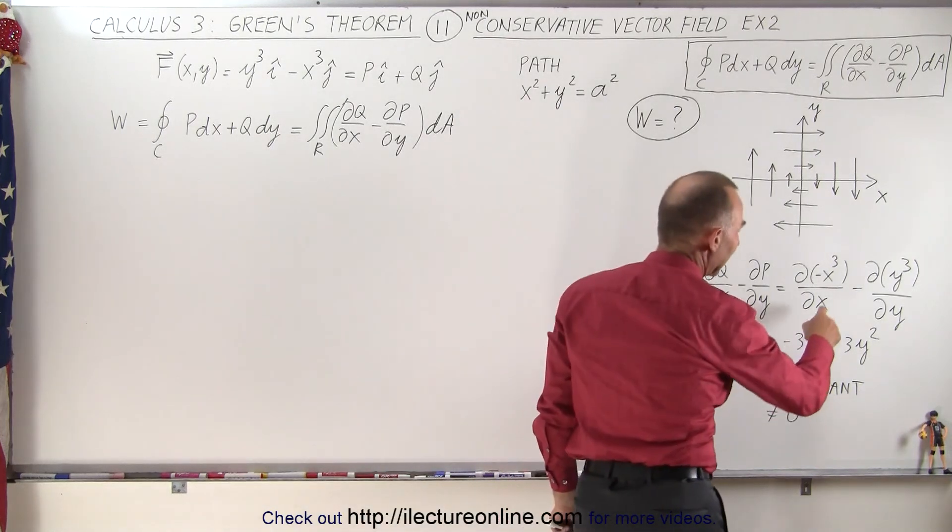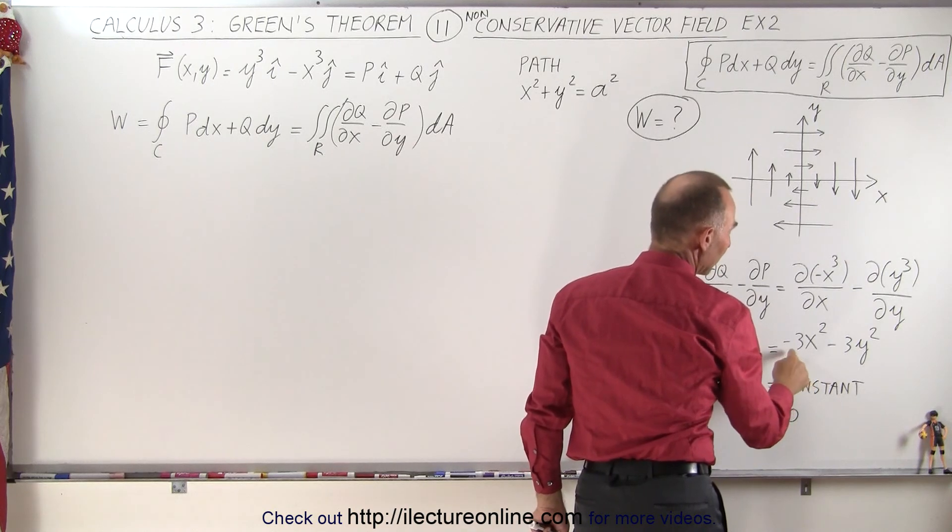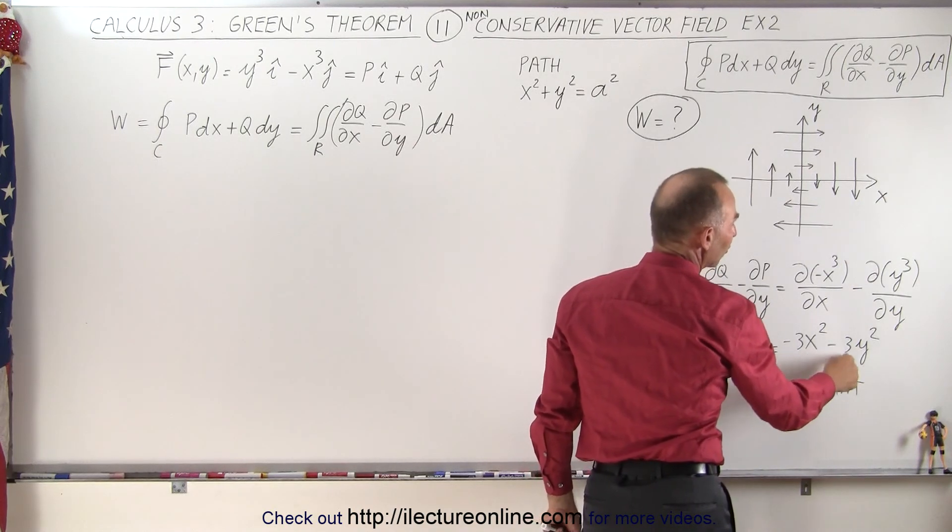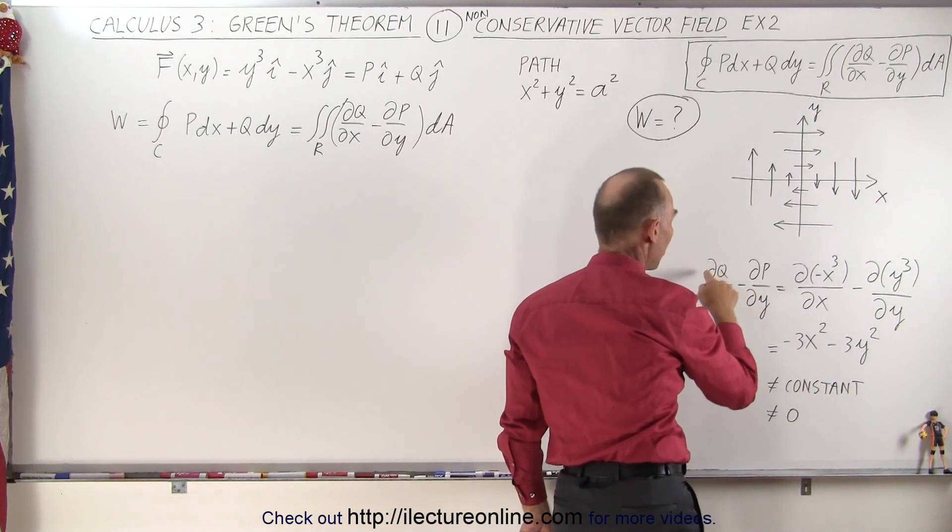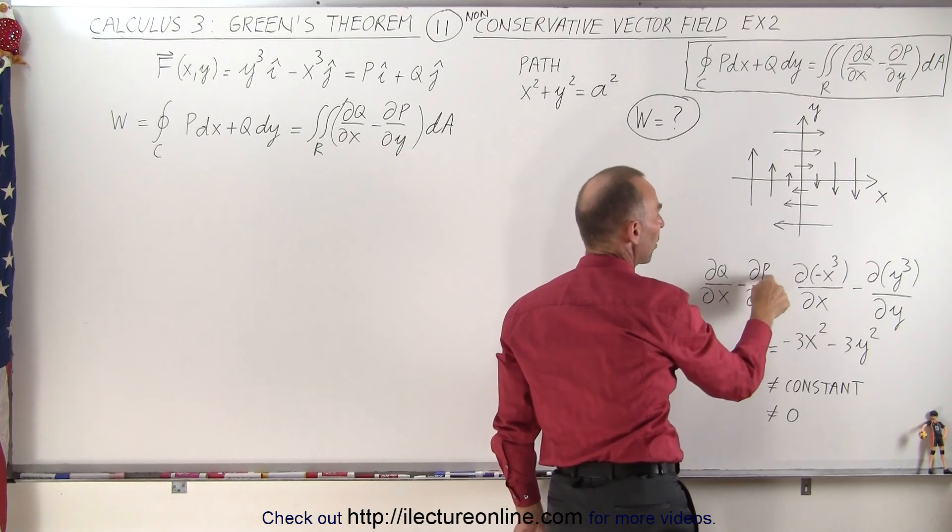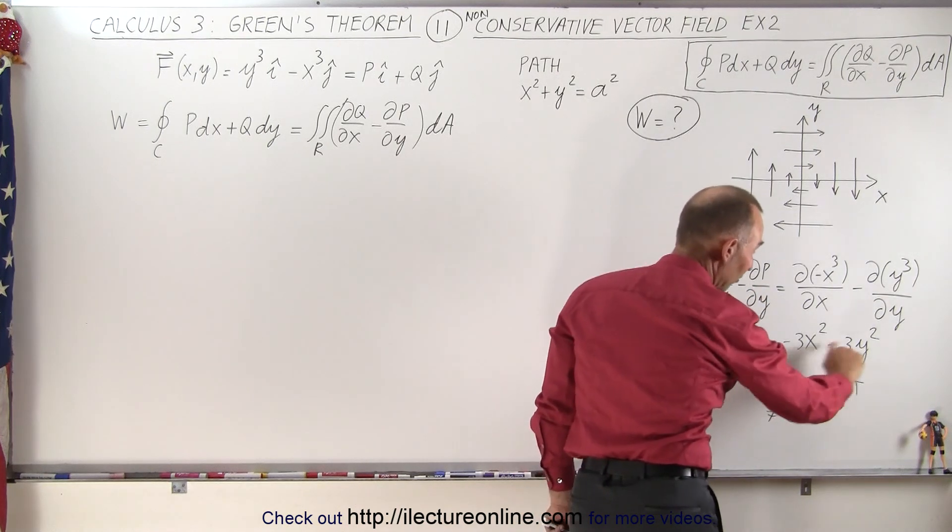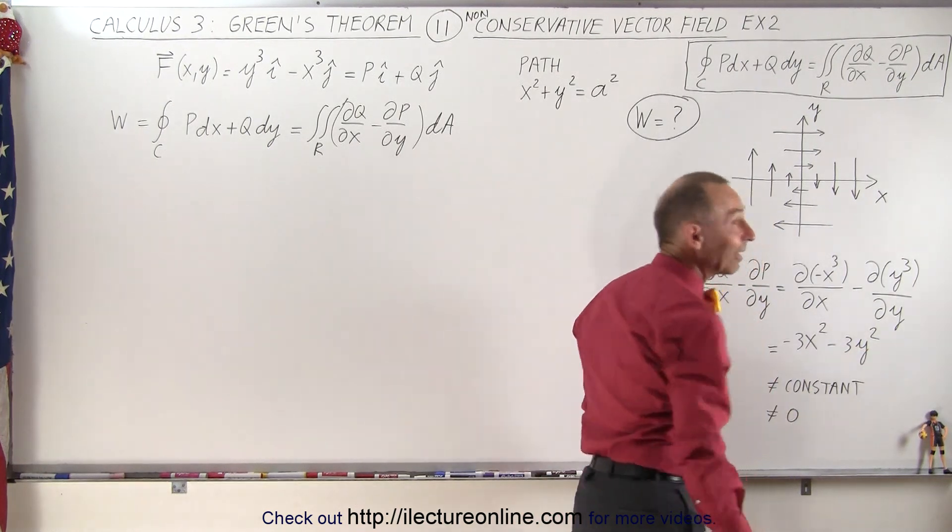Now, if you go ahead and evaluate this portion of Green's theorem, notice we get minus 3x squared minus 3y squared for the partial of the j component with respect to x minus the partial of the i component with respect to y. Notice it's not a constant and notice it's not zero.